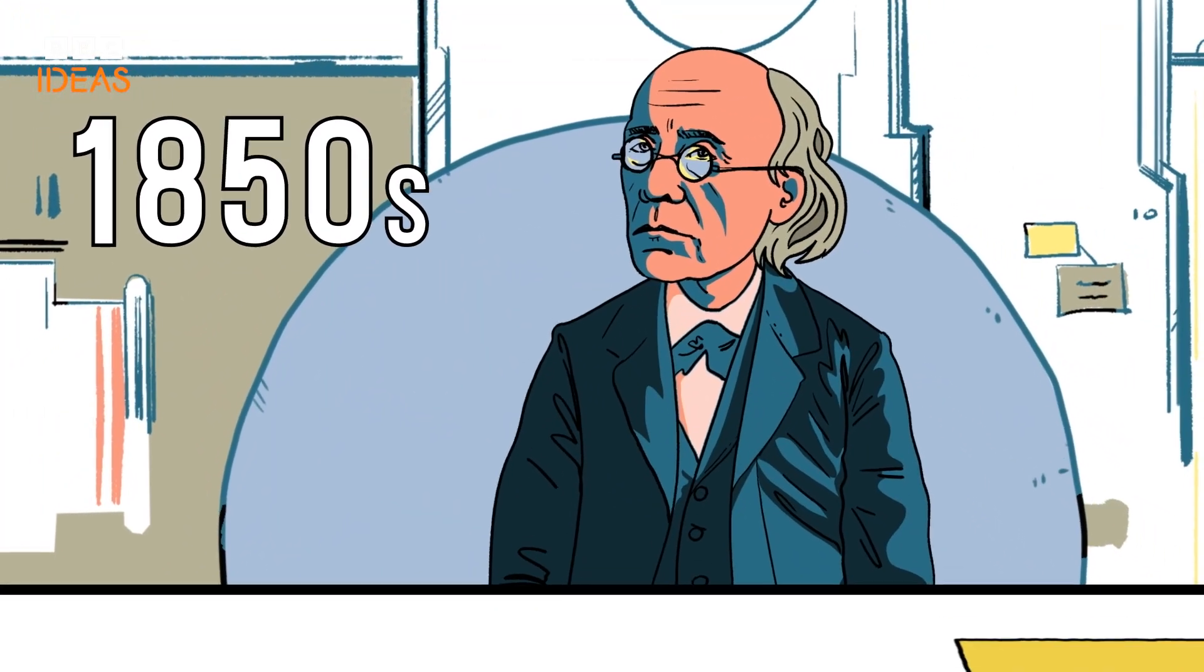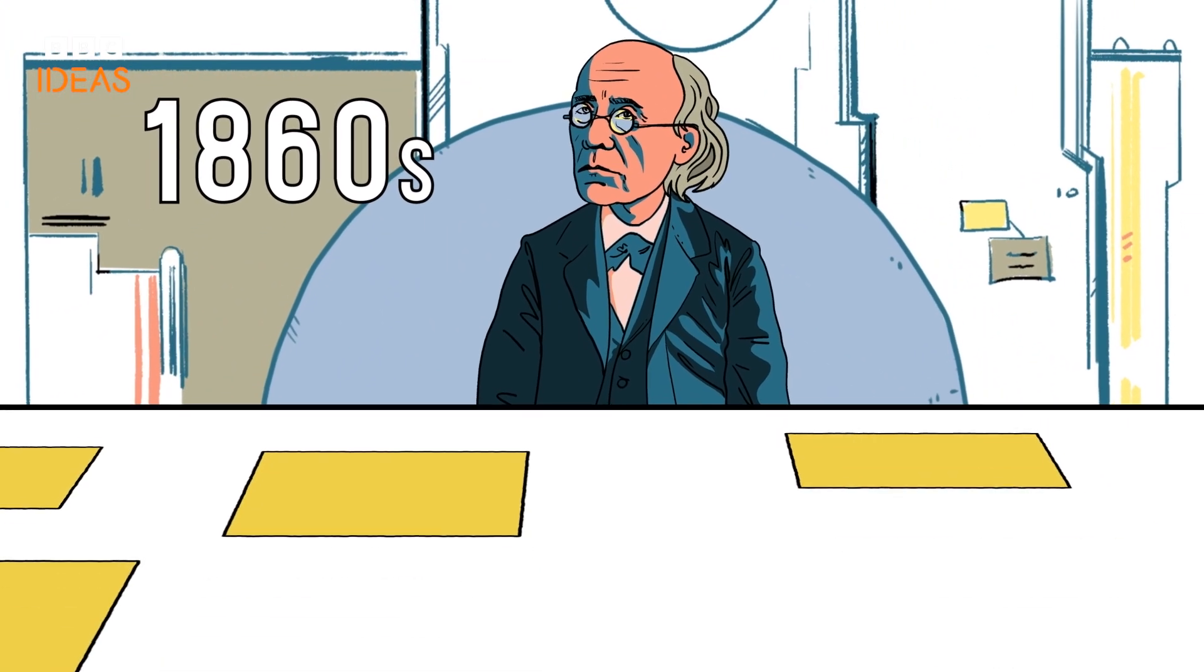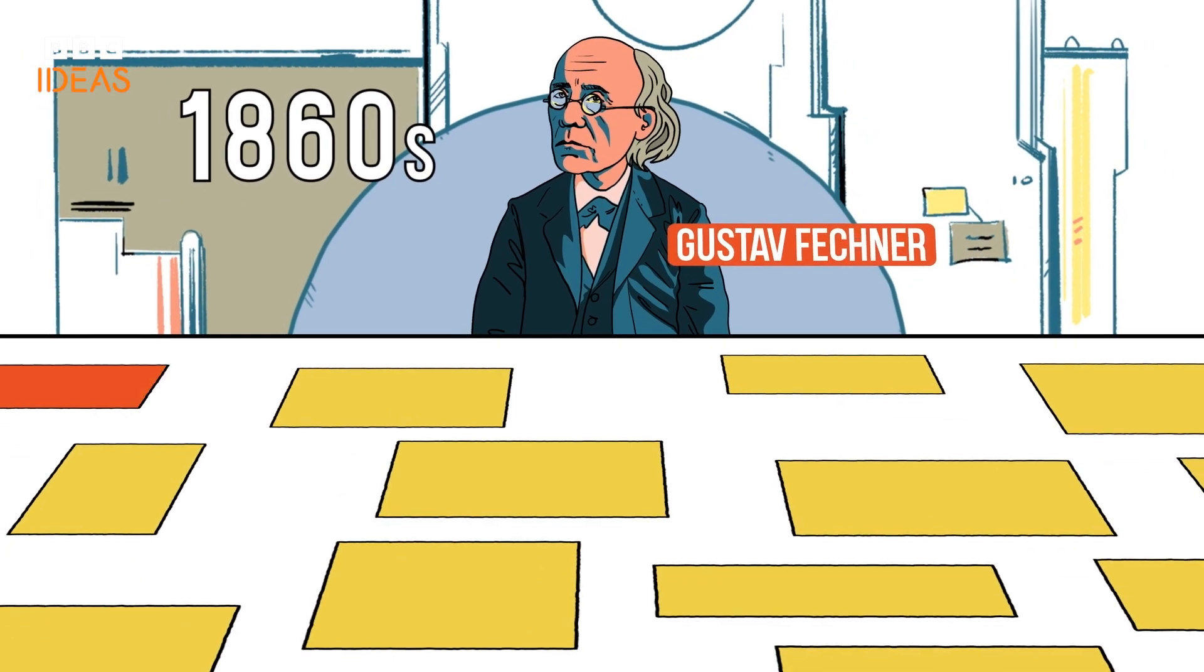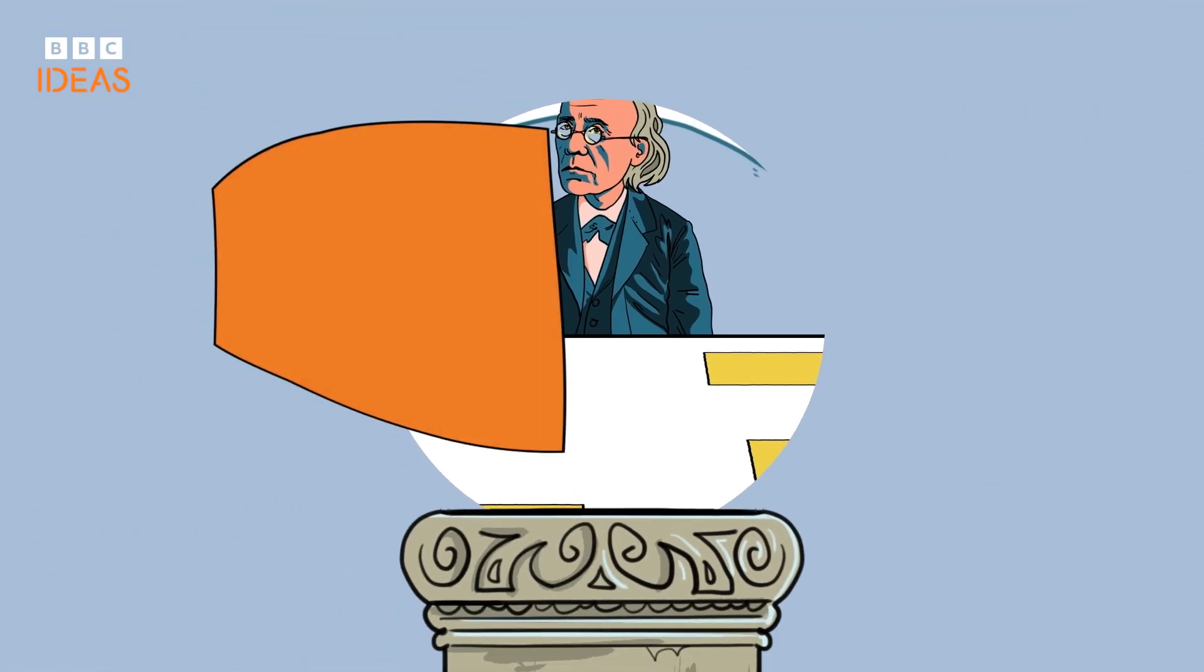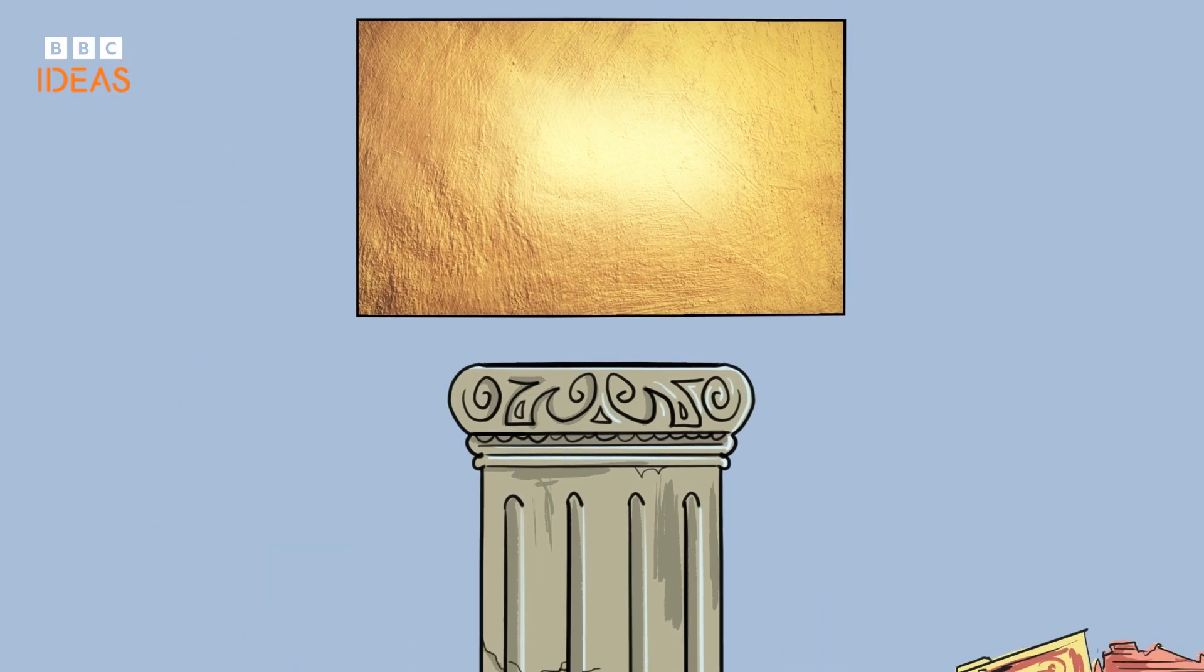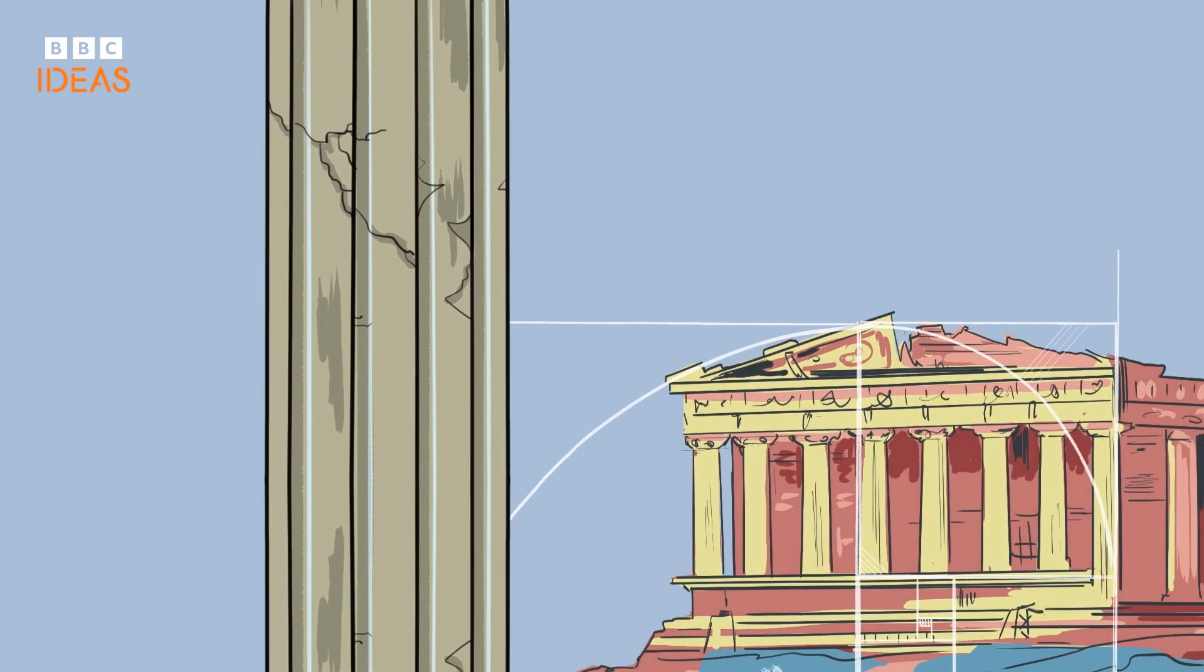In the 1860s, a German psychologist named Gustav Fechner showed people a variety of rectangles and asked them to pick their favorite. He reported that the winner was the golden rectangle. And so began the beguiling idea that there's a particular proportion that is the most beautiful to the human eye.